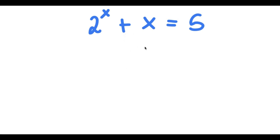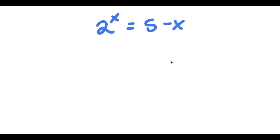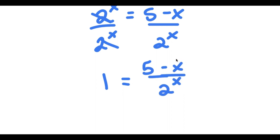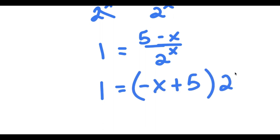In this problem, I have 2 to the power of x plus x equals 5. I'm going to first start by subtracting x on both sides, so I get 2 to the power of x is equal to 5 minus x. Now I'm going to divide both sides by 2 to the power of x, so I get 1 is equal to 5 minus x over 2 to the power of x, which is the same thing as negative x plus 5 times 2 to the power of negative x.